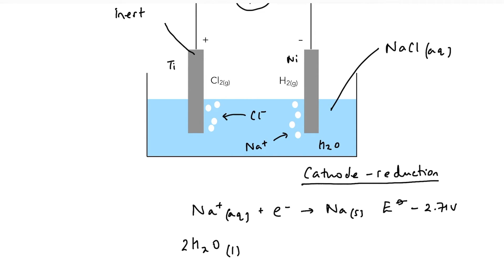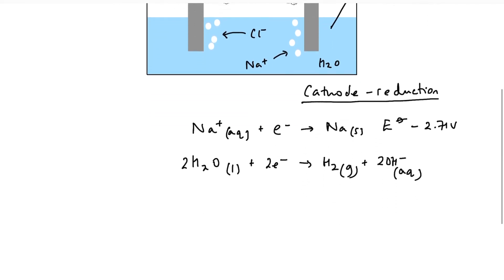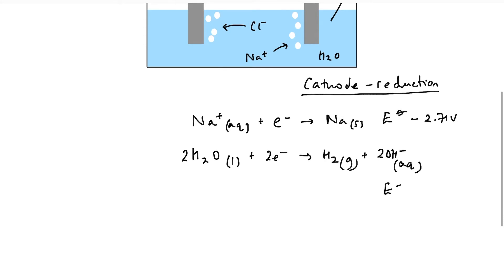For water, we've just seen this equation to form hydrogen gas and hydroxide ions. And the standard electrode potential for this reaction is minus 0.83 volts. So it is more feasible, it's easier, whichever way you would like to say it, to reduce water than it is sodium, because sodium has got such a negative standard electrode potential.